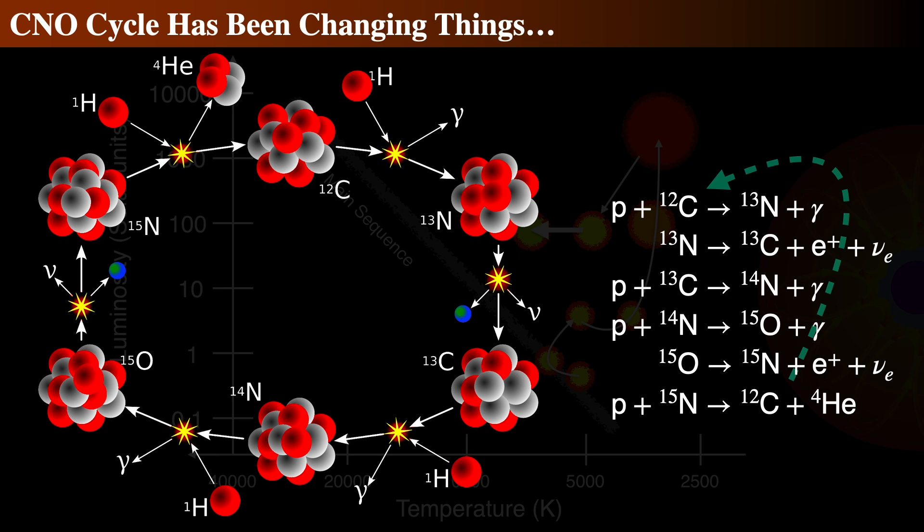Now the Sun only gets about 2% of its energy from the CNO cycle, but in slightly larger stars, about 1.1 solar masses or more, CNO accounts for 50% and then dominates the energy production at all higher masses. Just like the proton-proton chain, the net result is a conversion of 4 protons into 1 helium nucleus, with a release of energy in the form of gamma-ray photons, neutrinos, and positrons.